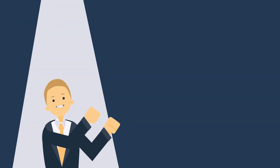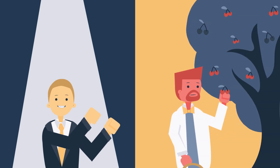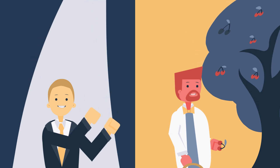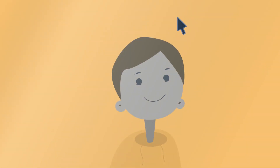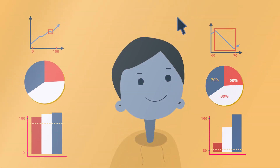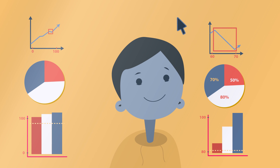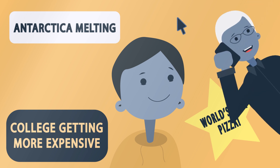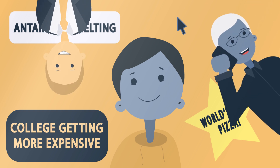From politicians misrepresenting data to appeal to voters to scientists cherry-picking data to exaggerate their research progress, data misrepresentation can bend the truth in extreme ways. However, now that you've seen how data can be manipulated, you can be more wary of the information you receive, and thus make well-informed choices, whether it's choosing between brands, candidates, or beliefs.